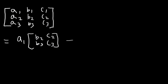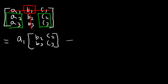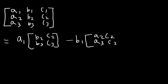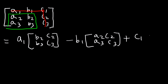Now let's move on to the next one. So it's going to be minus B1. B1 is in the first row and the second column, so what's left over is A2, A3, C2, C3 — that's going to be in the next 2x2 matrix. And then plus C1. C1 is in row 1, column 3, so what we have left over is A2, B2, A3, B3. And then you know how to evaluate a 2x2 matrix, because we covered that already.